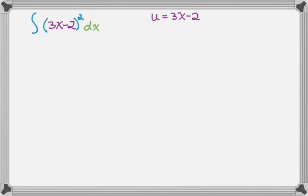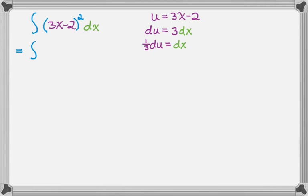I also color-coded the dx because people tend to forget to substitute in for that. So if u equals 3x minus 2, then du is going to be 3 dx. I want to substitute in for everything and get everything in terms of u, so 1/3 du is equal to dx — I divided both sides by 3. Now making substitutions: 3x minus 2 is just u, so it's u squared, and dx is the quantity 1/3 du.